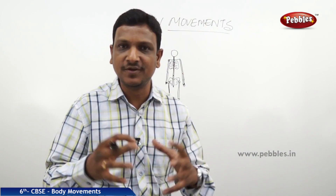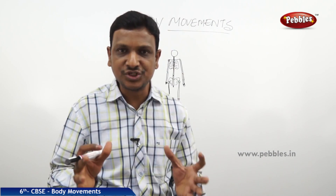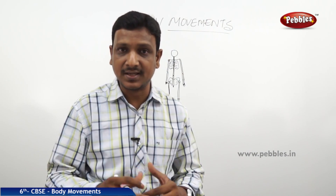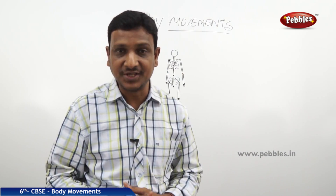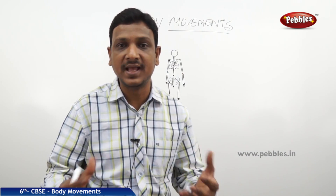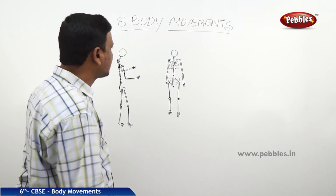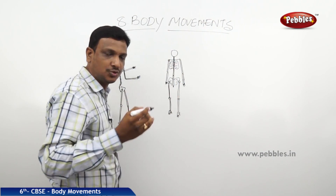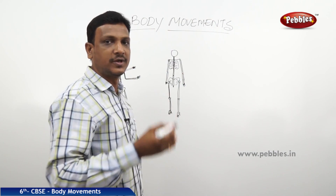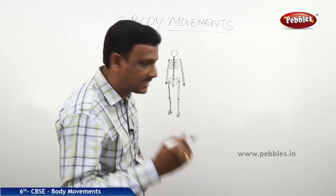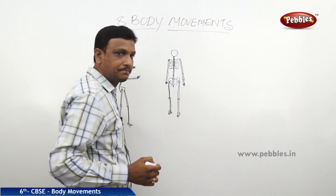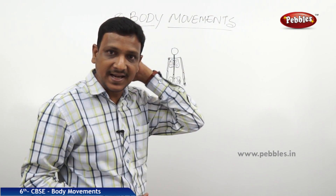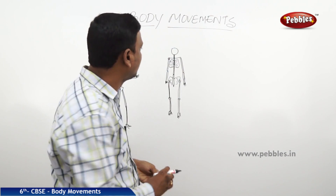Now let us identify the joints — the locations in our body where we have joints, what those joints are, and what their function is. What kind of movement or rotation do they allow? There are so many joints in our body; we will focus on the important ones.